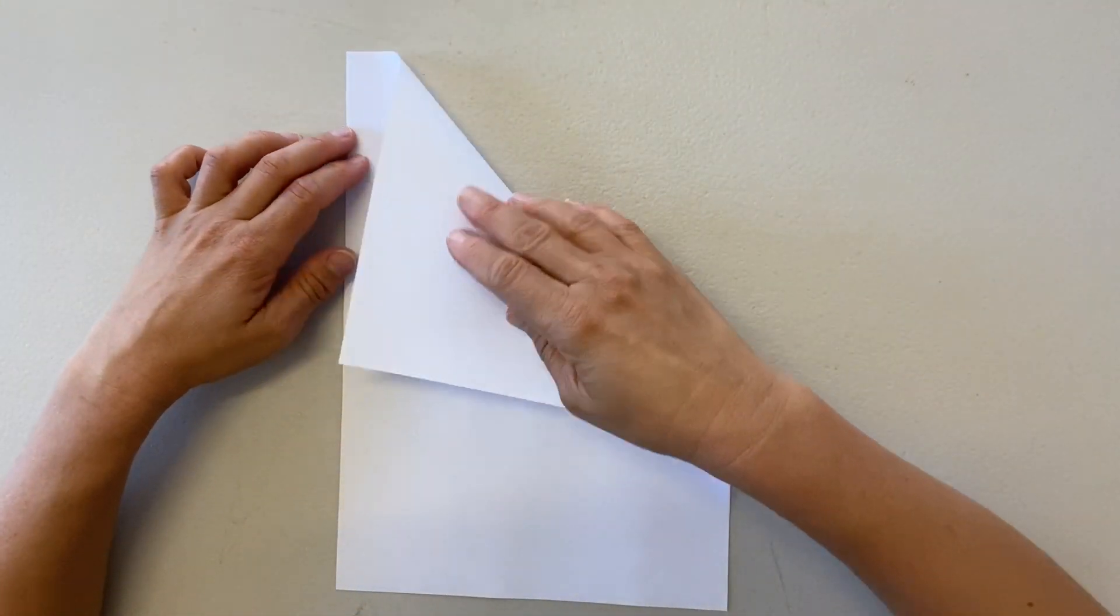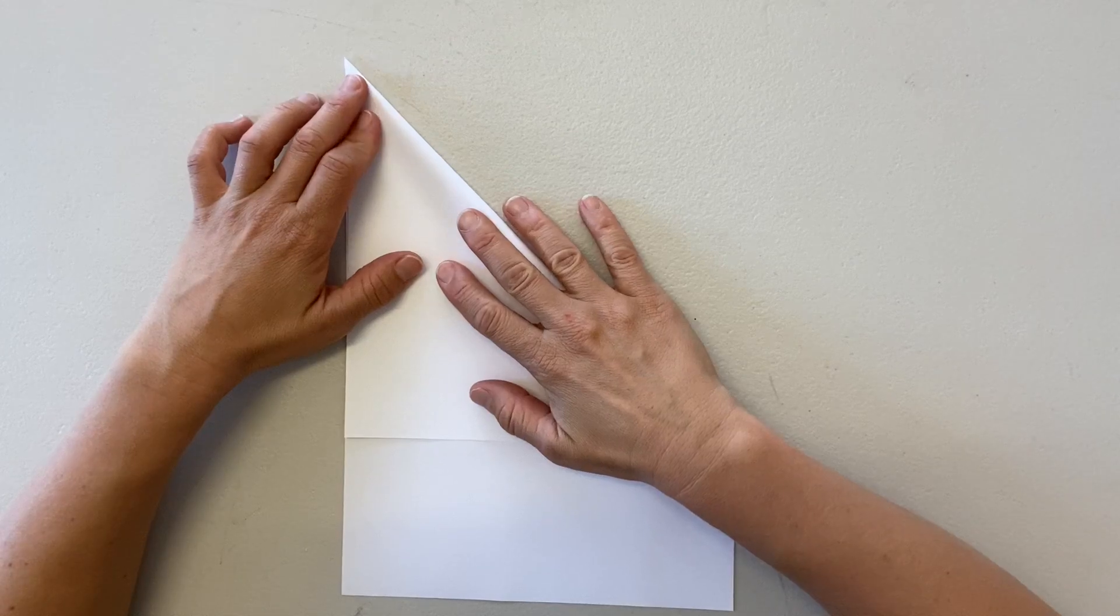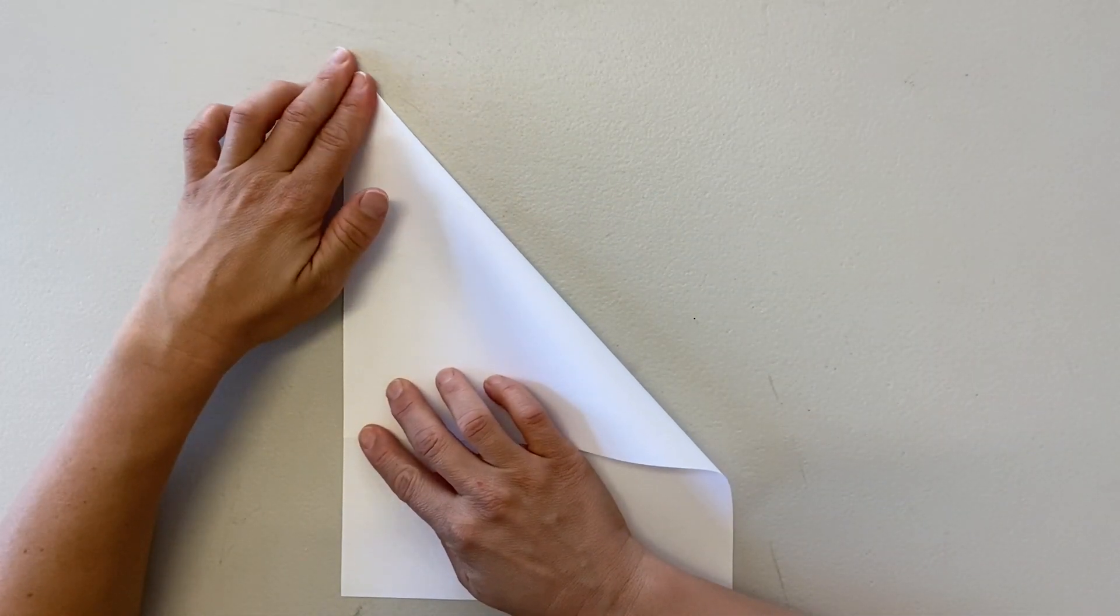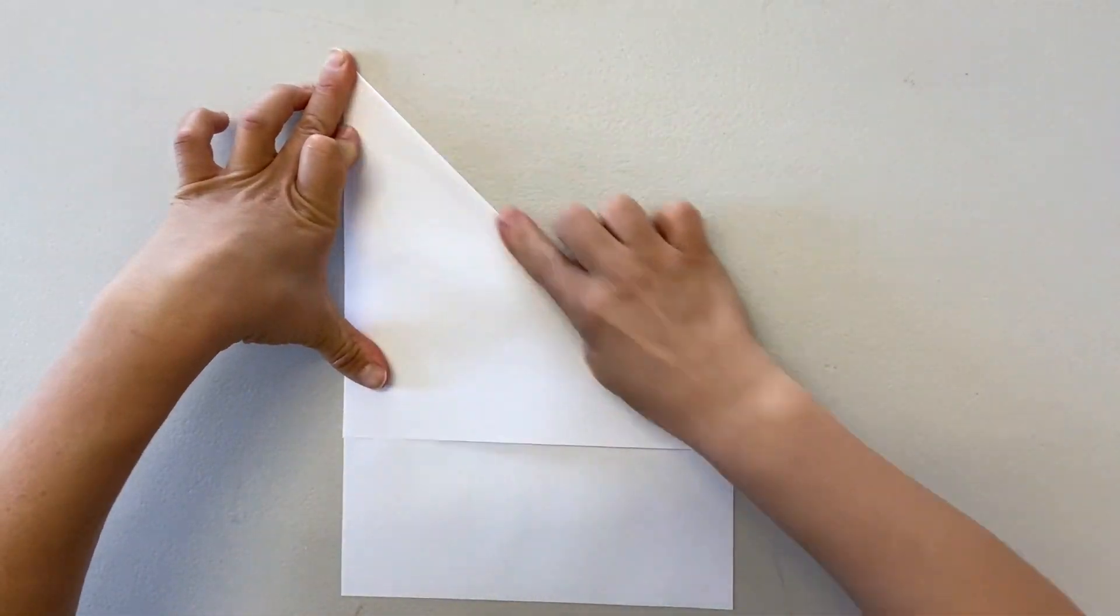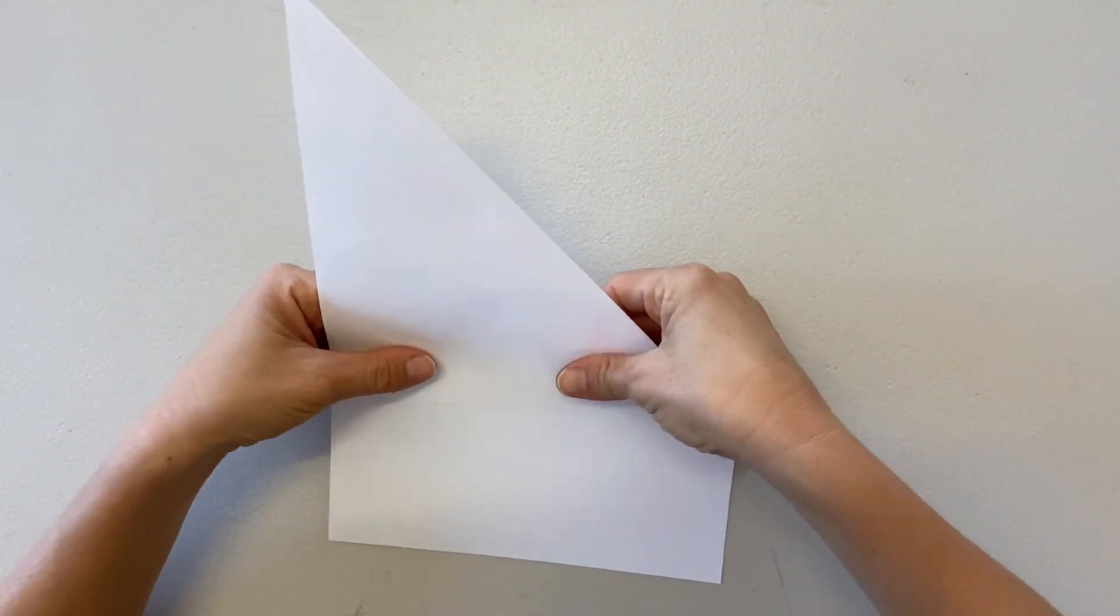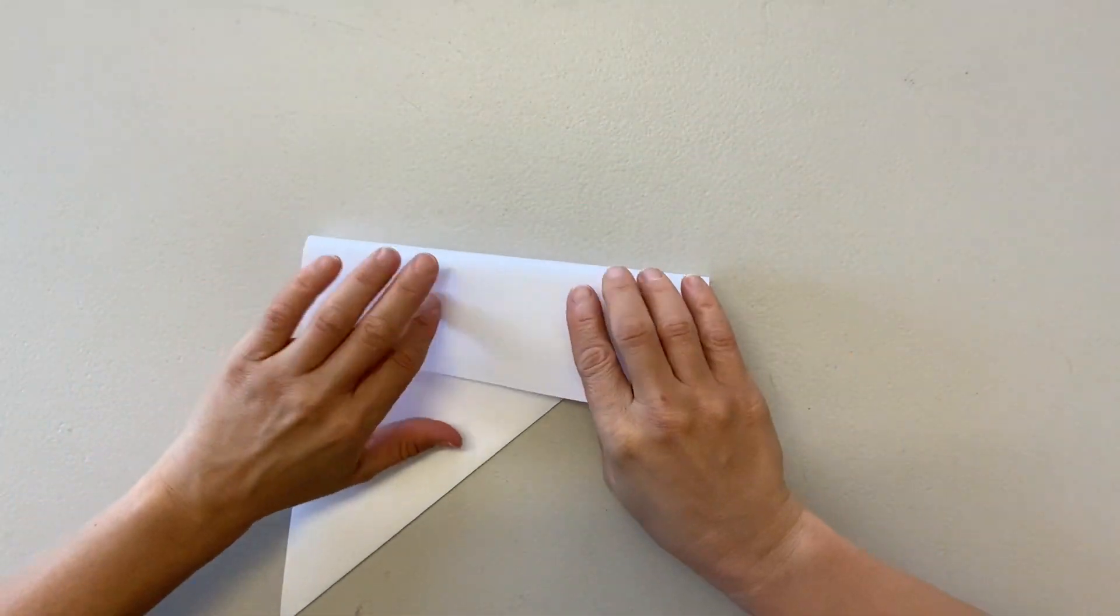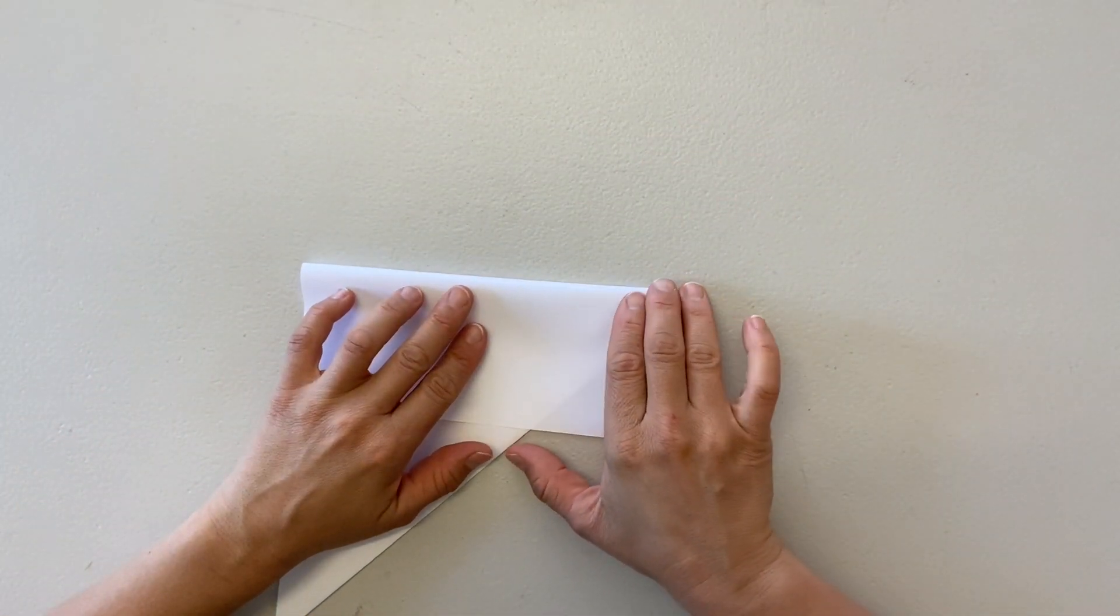So let's get to it. If you have a rectangular piece of paper, you'll need to turn it into a square. Take a top corner and fold in line with the opposite long side. Now fold the narrow section over itself in line with the folded paper.